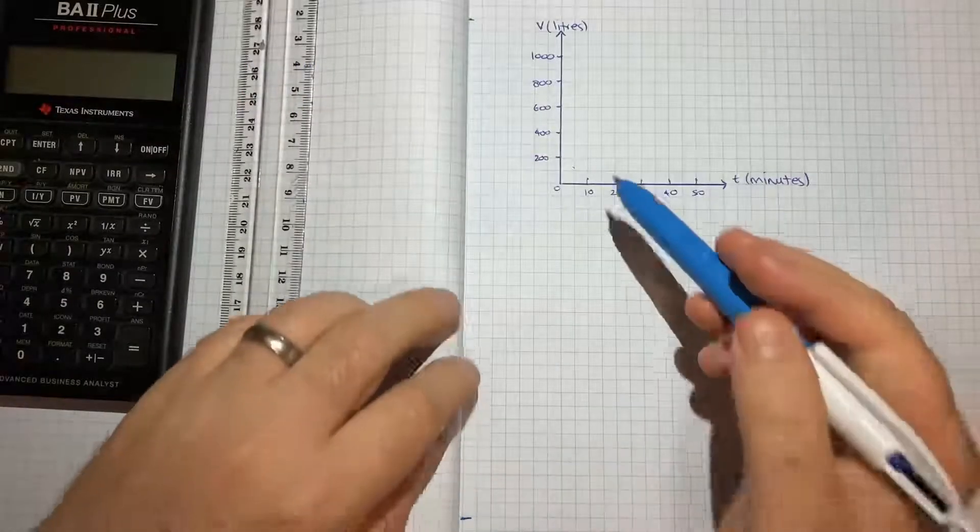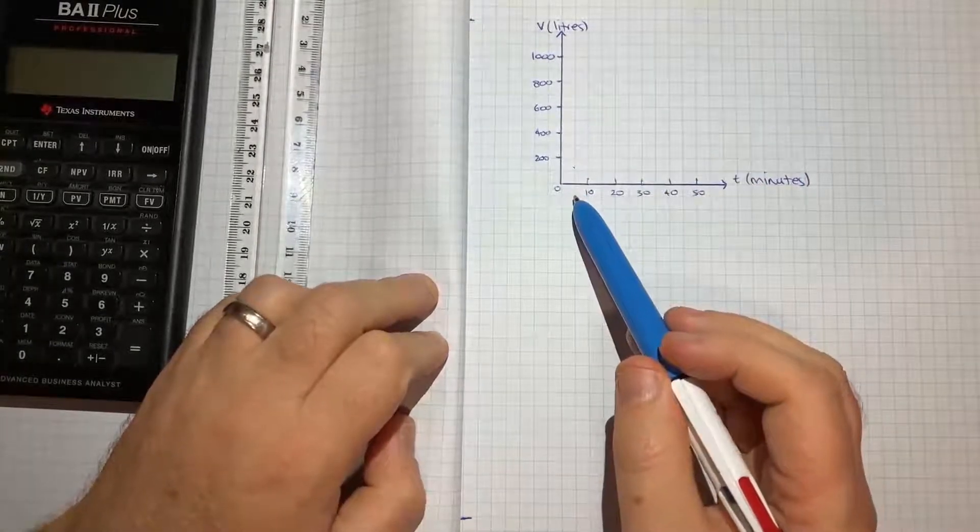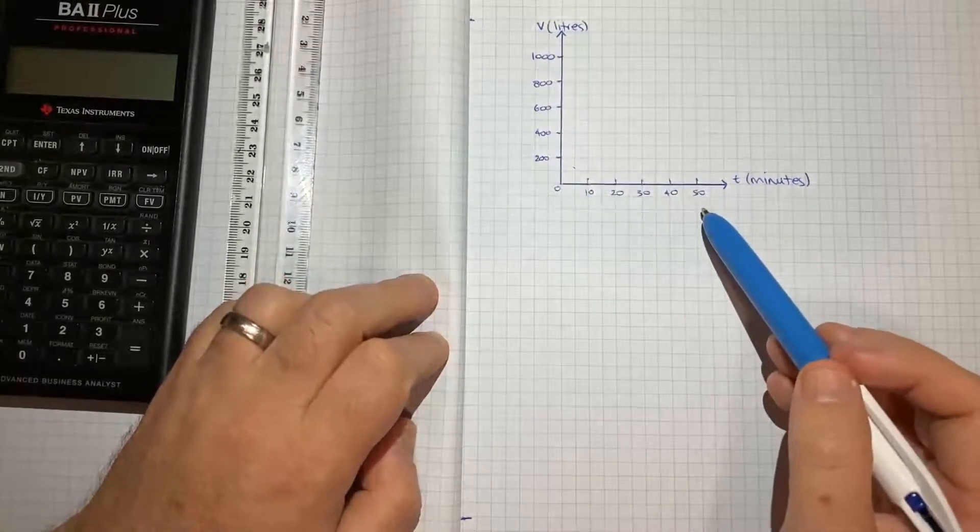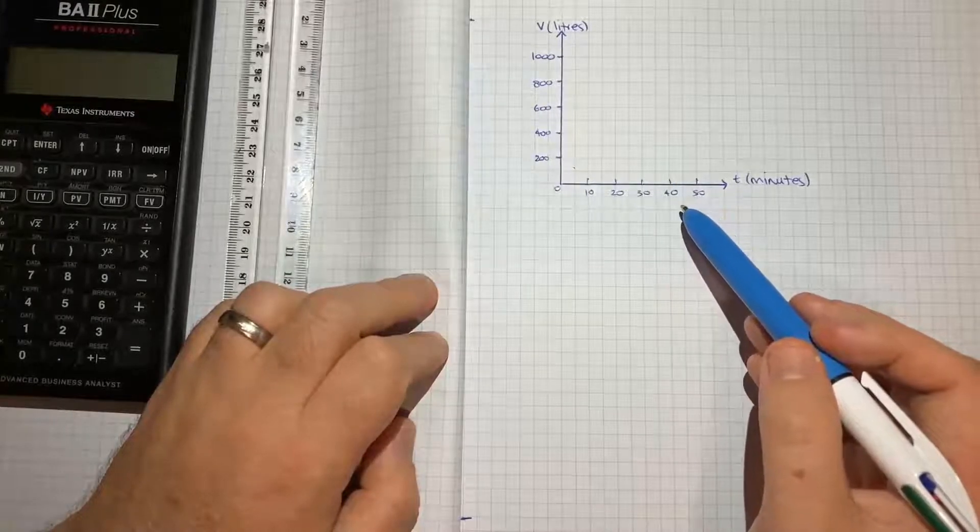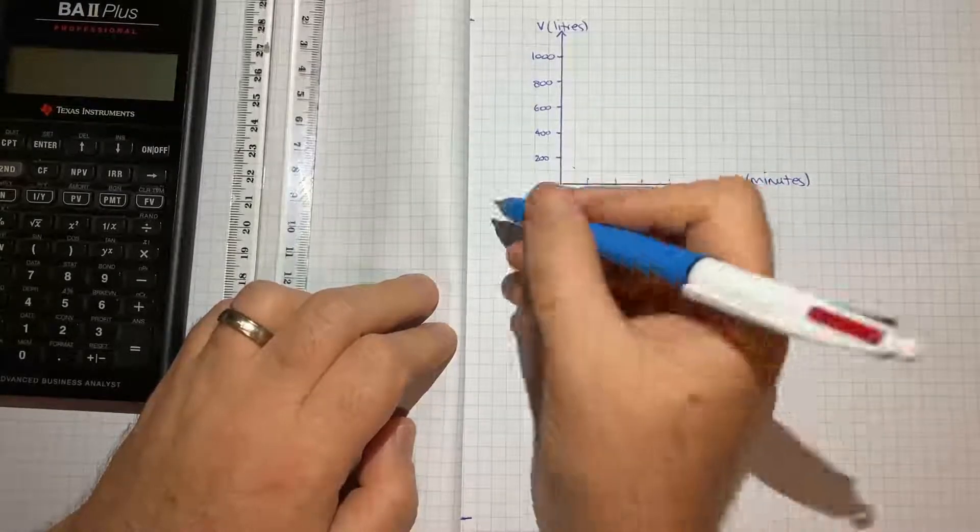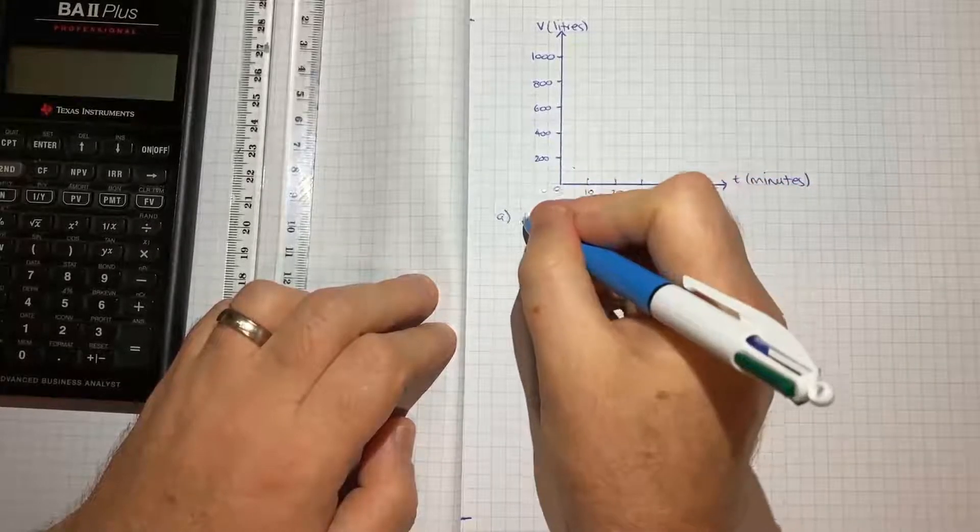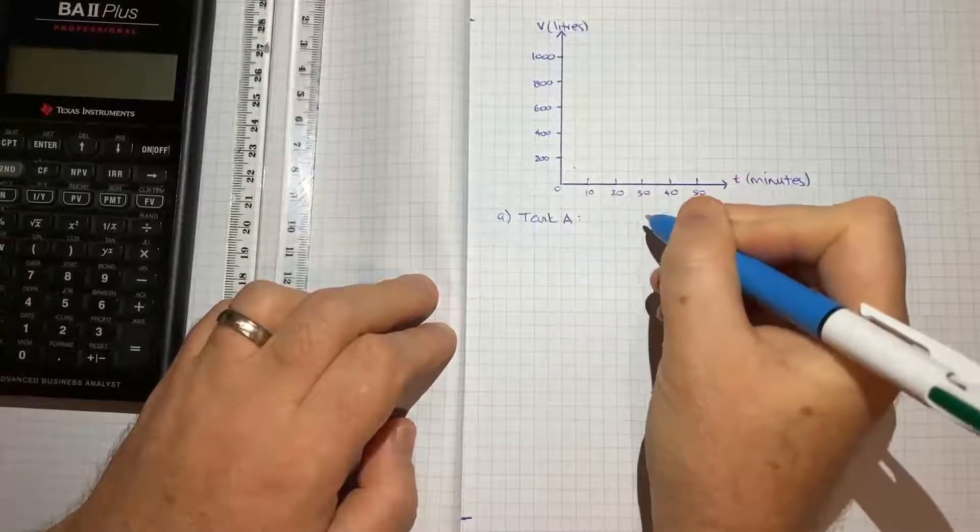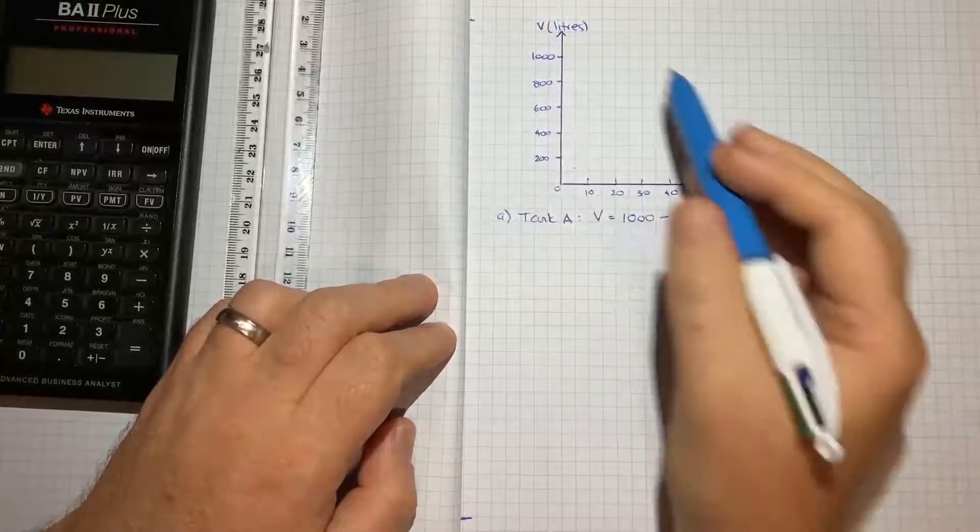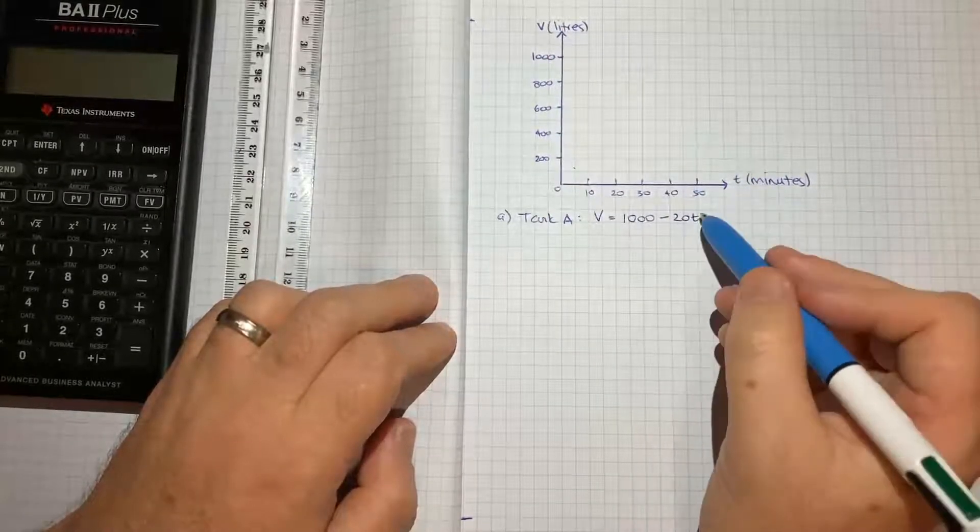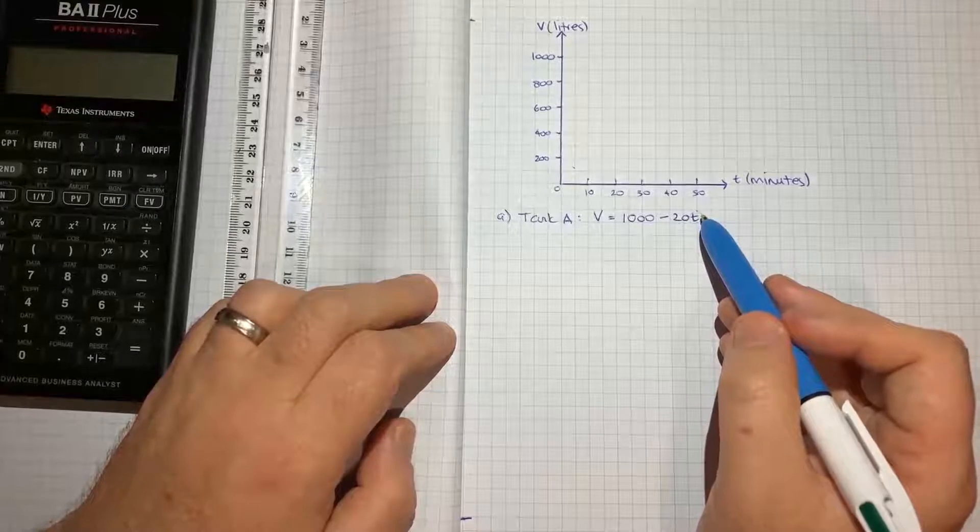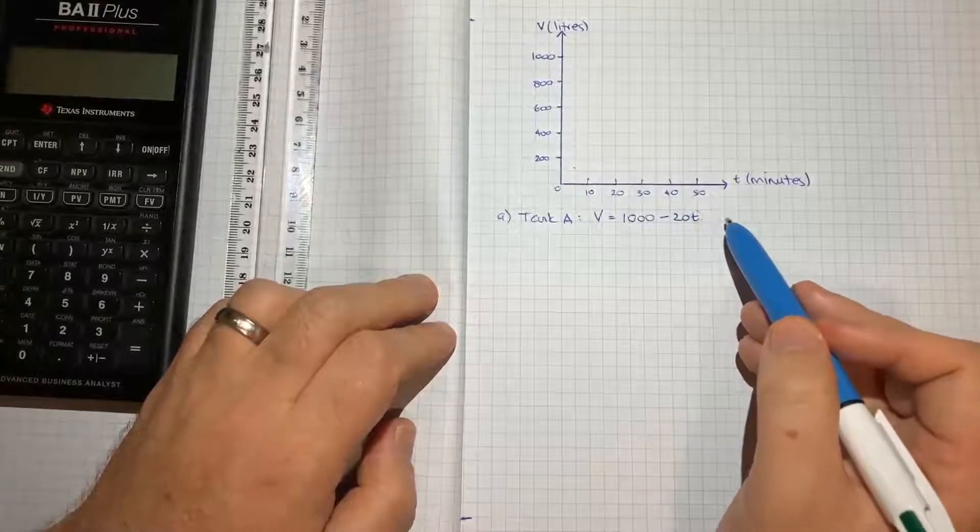For the first part, part A, I've drawn up an axis in advance. It's going to be slightly different in terms of precision than the grid provided, but it should still suffice for answering the question. Part A needs us to draw a line representing V. For tank A, the volume equals 1000 - 20T. We can see that T is just to the power of one, so we're drawing a straight line. If we can just get two points and connect them, we'll have our line.